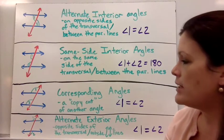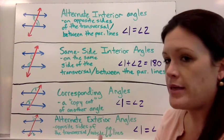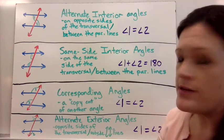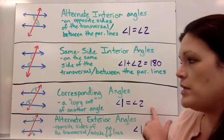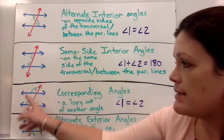These are called corresponding angles. I put that they're like a copycat of another angle within the same figure. And those would also be equal. So there are other ones I could label here.